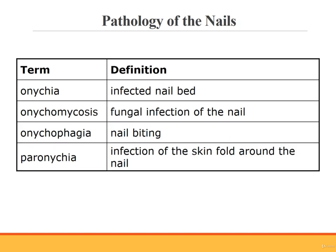Trichomycosis is a fungal infection of the hair. There are also pathology terms specific to the nails. Onychia is an infected nail bed. Onychomycosis is a fungal infection of the nail. Onychophagia literally means nail eating — it's more commonly referred to as nail biting. Paronychia is an infection of the skin fold around the nail.